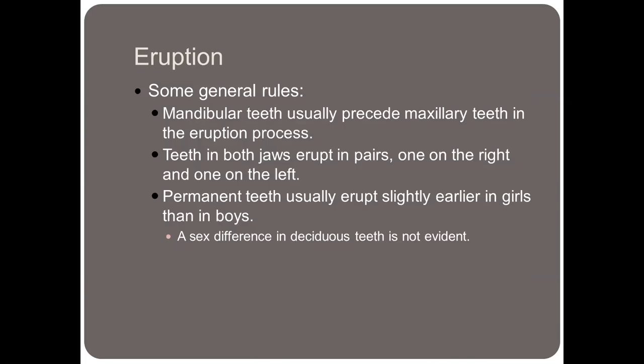Let's talk about some general rules. Mandibular teeth usually precede or come before the maxillary teeth in the eruption process. Teeth in both jaws erupt in pairs — one on the right and one on the left. Permanent teeth usually erupt slightly earlier in girls than in boys, and a sex difference is not noted in the deciduous teeth.